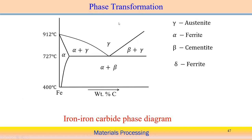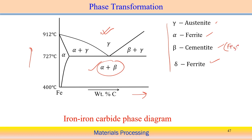Phase transformations under equilibrium conditions: in the iron–iron carbide phase diagram, we can see four different phases — gamma austenite, alpha ferrite, cementite (Fe₃C), and delta ferrite. The x-axis shows percentage of carbon, and the y-axis shows temperature. Cementite has a carbon content of approximately 6.67 weight percent, while ferrite can dissolve a maximum of 0.02 weight percent carbon. This phase diagram tells us what phases are present at what temperature, but only under equilibrium conditions.